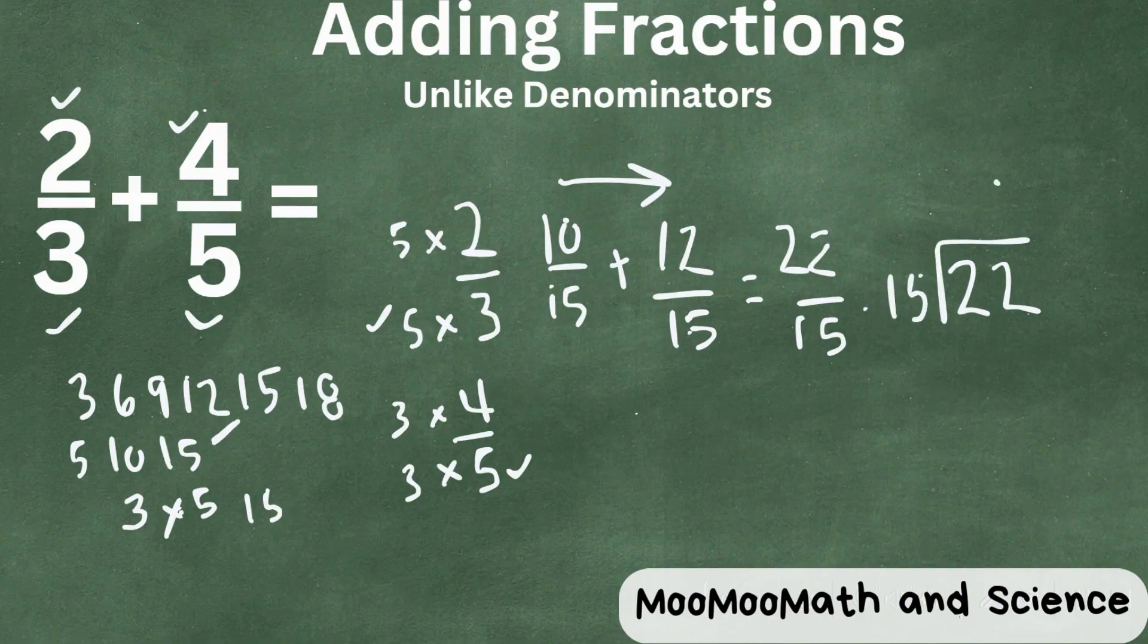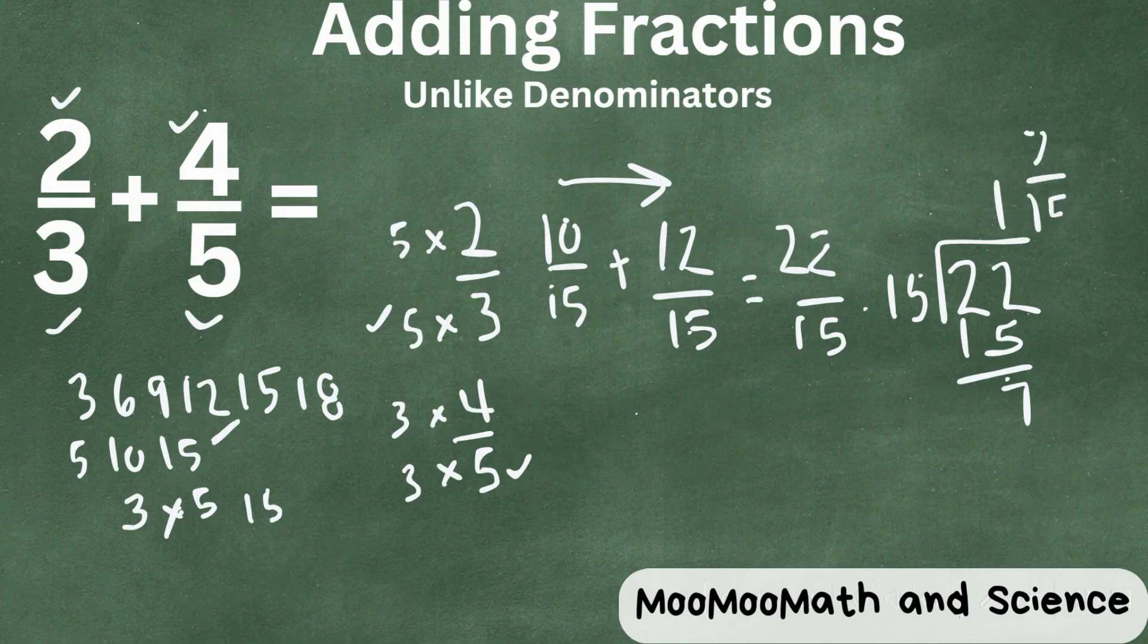Fifteen goes into twenty-two one time. One times fifteen is fifteen. Twenty-two minus fifteen is seven.